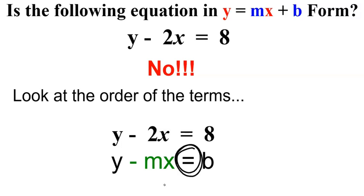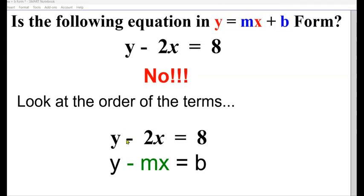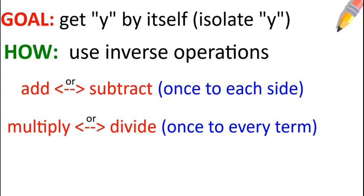But you can move the other parts. So what we want to do is take this minus 2x and move it to the other side of the equal sign, so it's over here with the b value. So in order to do that, we're going to use some inverse operations. Remember, the goal is to get y by itself, or isolate y, and how we're going to do it is using inverse operations, by either adding or subtracting a term or a constant or a variable, or multiplying or dividing by a coefficient.